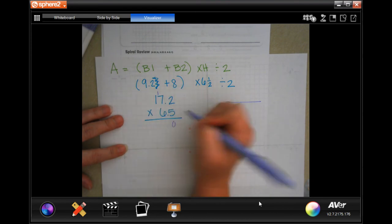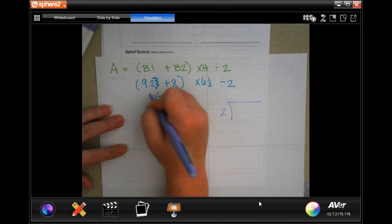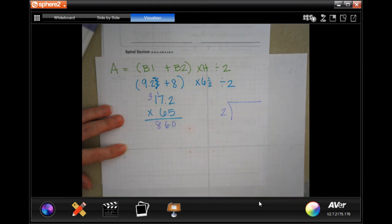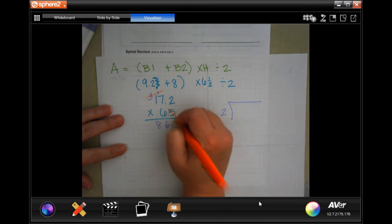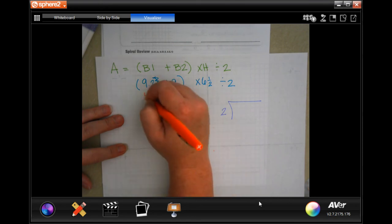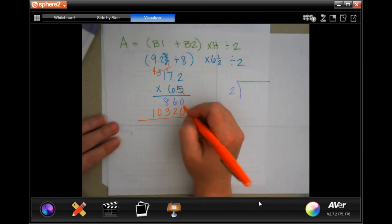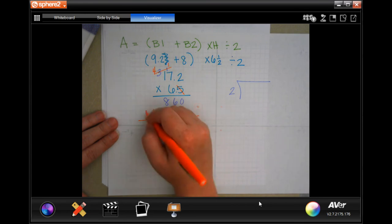Okay? So 5 times 2 is 10. Carry 1. 5 times 7 is 35. Plus 1 is 36. Carry 3. 5 times 1 is 5. Plus 3 is 8. Okay? We are going to tick, tack, toe. 6 times 2 is 12. Carry 1. 6 times 7 is 42. Plus 1 is 43. Carry 4. And 6 times 1 is 6. Plus 4 is 10. Okay? So now I'm going to go ahead and add them up.